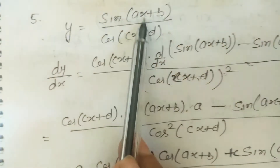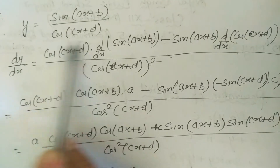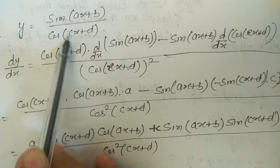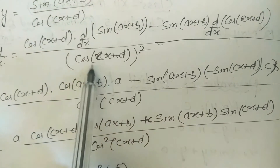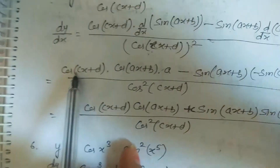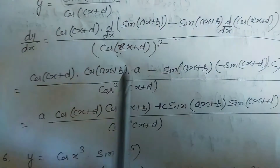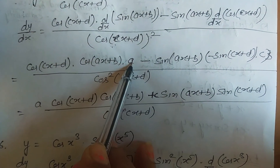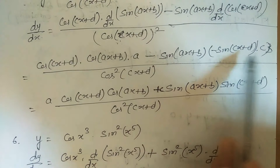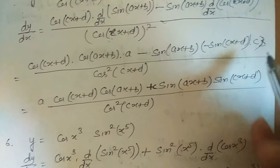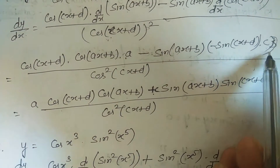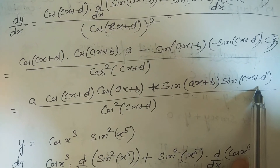Question 5: y = sin(ax+b)/cos(cx+d). Both numerator and denominator are functions of x, so apply quotient rule: [cos(cx+d)·d/dx(sin(ax+b)) − sin(ax+b)·d/dx(cos(cx+d))] / cos²(cx+d). = [a·cos(cx+d)·cos(ax+b) + c·sin(ax+b)·sin(cx+d)] / cos²(cx+d).